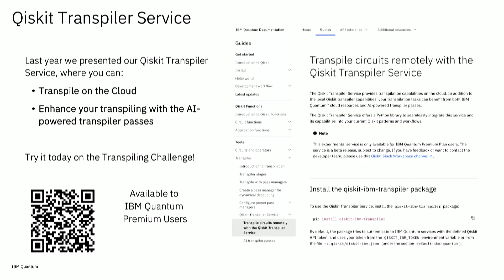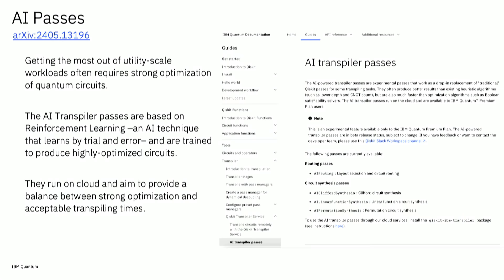So first I'm going to talk about these AI passes. You may be wondering why are we doing this? There is a big hype around AI but that's not the only reason. We actually found that by applying AI to certain optimization problems in transpiling, we can get a good balance between optimization and runtime.